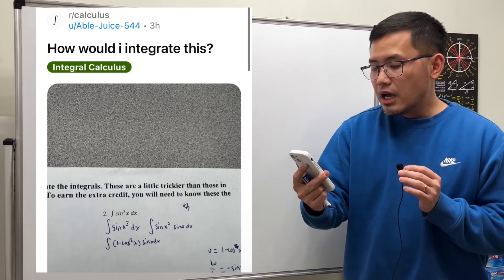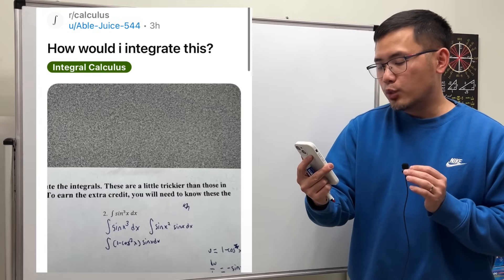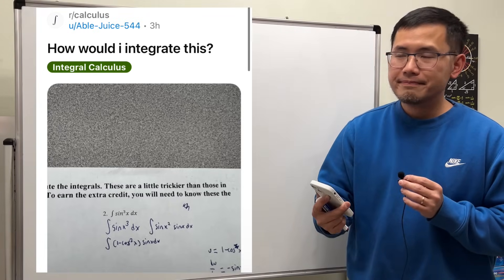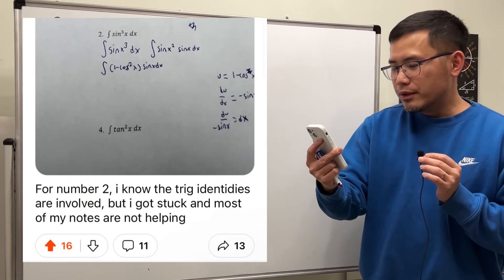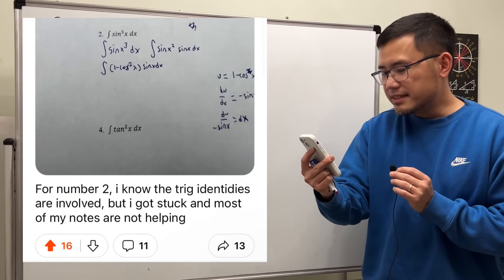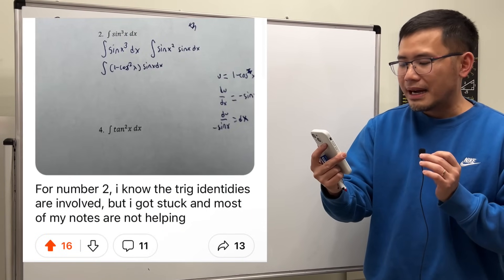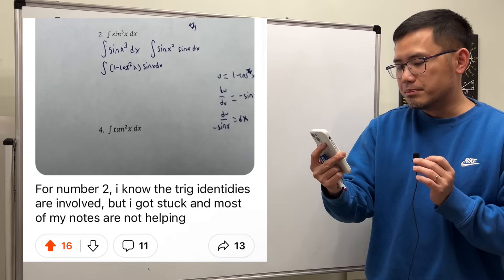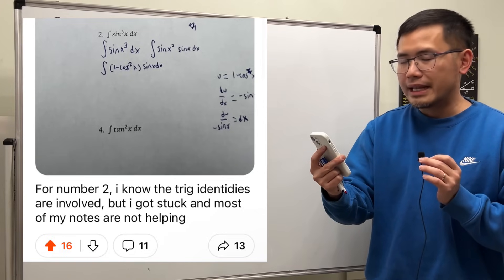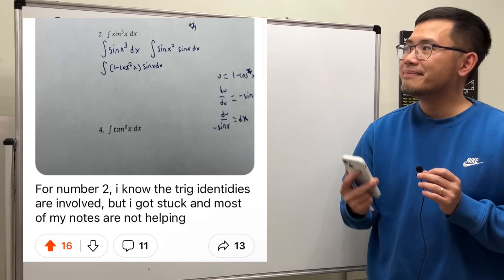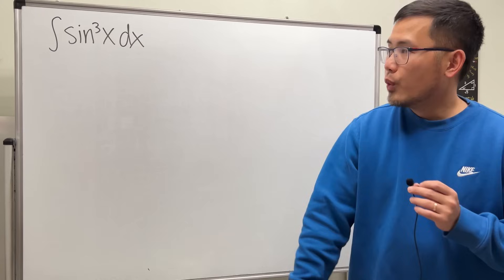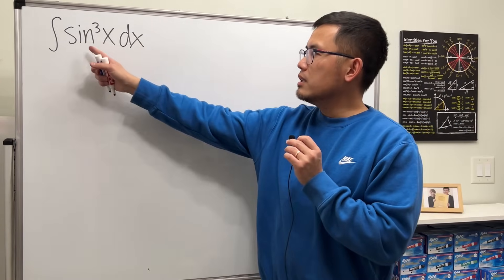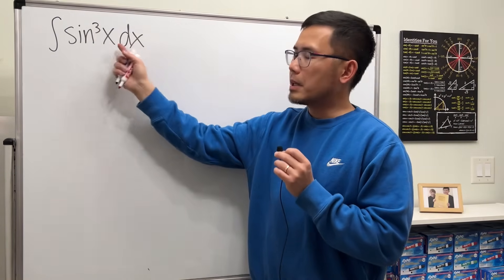How would I integrate this for number two? I know trig identities are involved but I got stuck and most of my notes are not helping. Okay, let's have a look — we are integrating sine to the third power x.